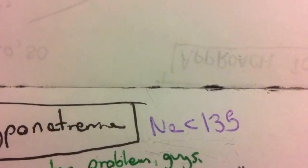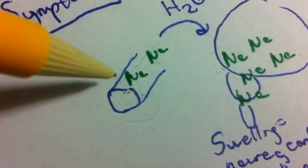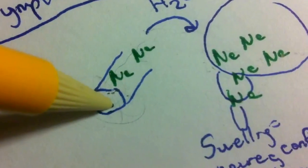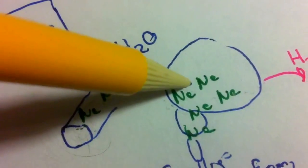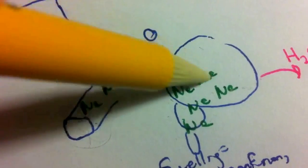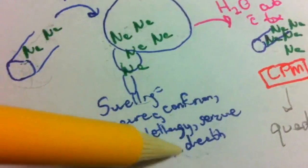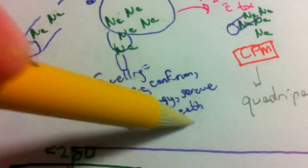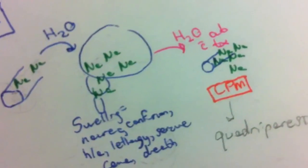The symptoms of hyponatremia are related to the fact that when sodium is low inside the blood vessel, the blood becomes hypotonic and the brain becomes hypertonic. Water moves from the blood vessel into the brain cells causing swelling, which results in symptoms of nausea, confusion, headache, lethargy, seizure, coma, and death.